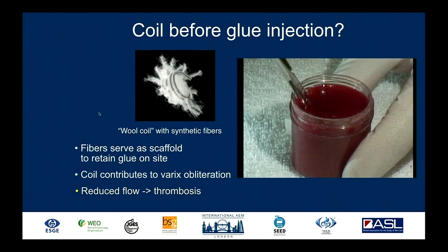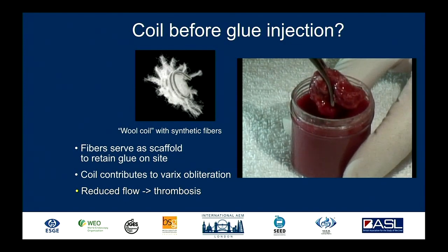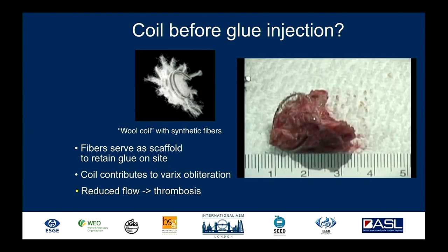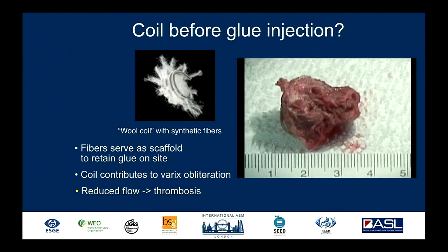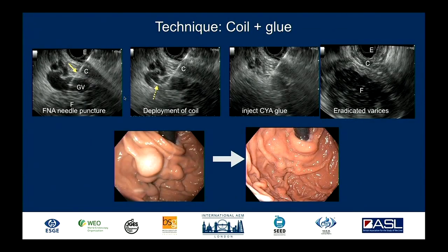The hybrid approach — coil before glue — uses the fibers as a scaffold to retain the glue on site. The coil contributes to varix obliteration and reduces flow, further contributing to thrombosis. In an ex vivo demonstration, injecting glue into a container of blood with a coil showed that the glue attached fully to the woolly fibers of the coil with no residual glue in the container. The technique involves FNA puncture, coil deployment, glue injection — and this is the appearance after eradication: before and after.